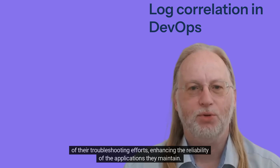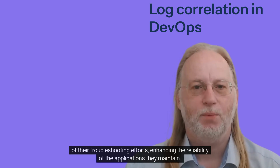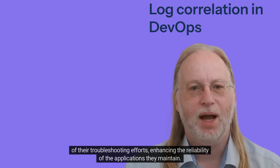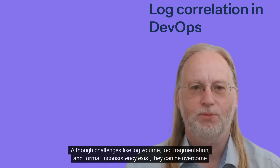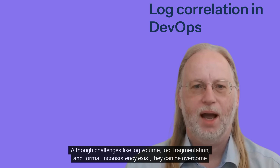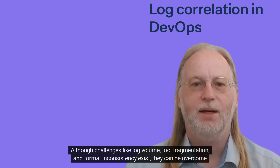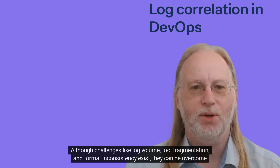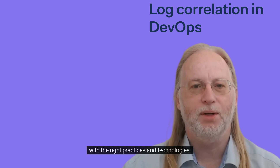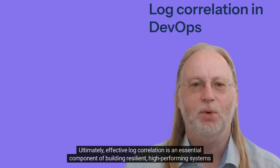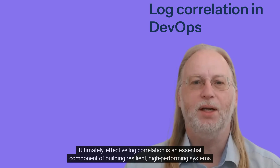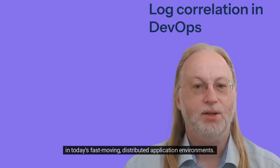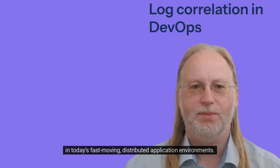Log correlation is an indispensable practice in modern DevOps workflows, enabling teams to gain visibility into system behavior, diagnose issues quickly, and optimize performance across complex systems. Although challenges like log volume, tool fragmentation, and format inconsistency exist, they can be overcome with the right practices and technologies. Ultimately, effective log correlation is an essential component of building resilient, high-performing systems in today's fast-moving distributed application environments.